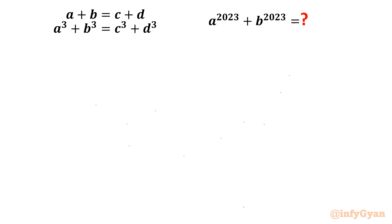The equations are: a plus b equal to c plus d (equation 1), and a cubed plus b cubed equal to c cubed plus d cubed (equation 2). We have to find the value of a to the power 2023 plus b to the power 2023. Let's get started.